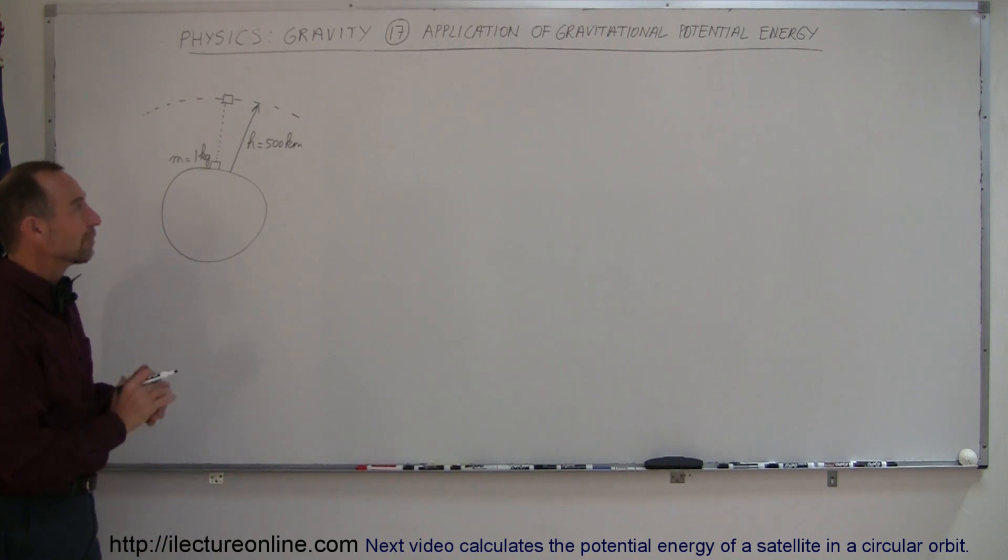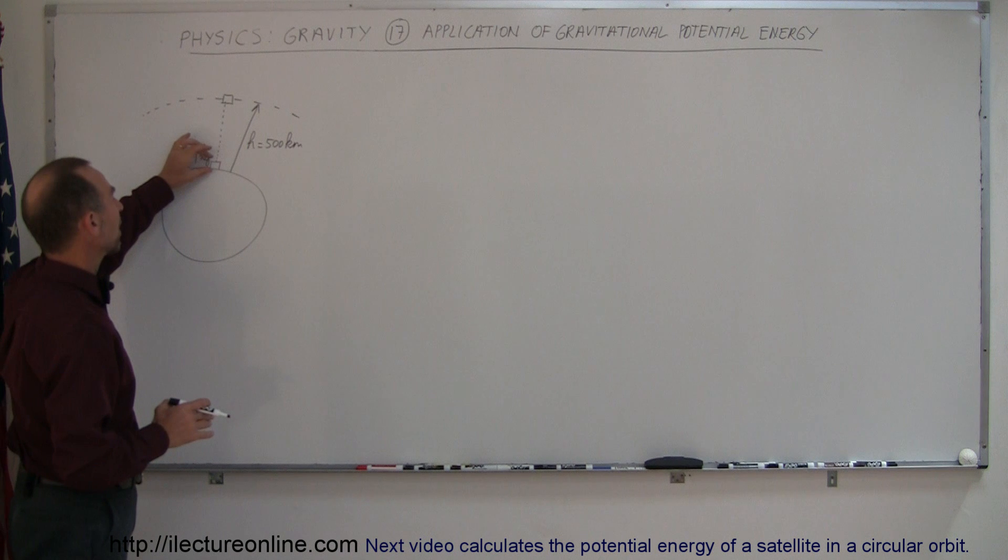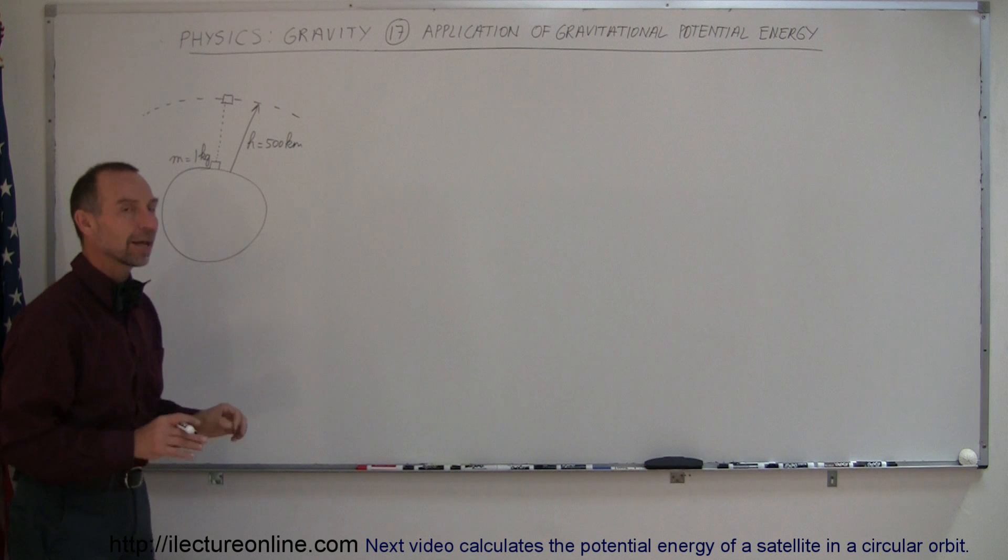To solidify our understanding of the gravitational potential energy, let's do another example. Let's say we have a 1 kilogram object on the surface of the Earth, and let's move it into space at a height of 500 kilometers.